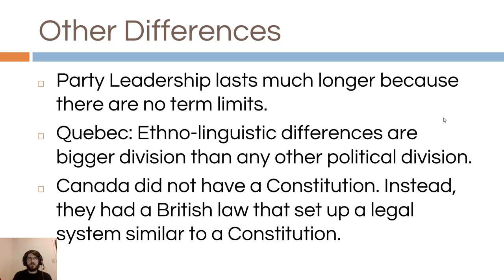Canada doesn't have a presidential system the same way the US does — the leader of the party in power becomes prime minister, similar to the British parliamentary system. There's no term limit, which means you could lead for a very long time if successful. Quebec, because of its social, cultural, and language differences, has a pretty significant sense of independence and different responses to the Great Depression. Canada also didn't have a constitution until the 1980s — instead they had the British North America Act, a British law that set up a legal system somewhat like a constitution. But again, they are a dominion, part of a larger empire.